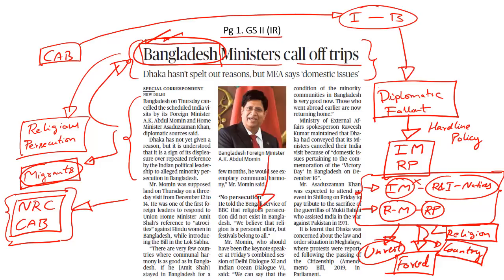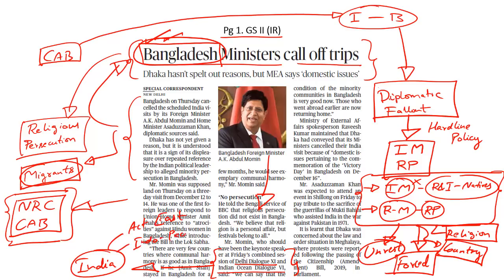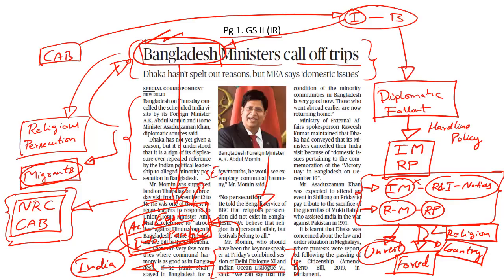The Bangladeshi foreign minister was supposed to participate in two important dialogues — the 11th edition of the Delhi dialogue and the 6th edition of the Indian Ocean dialogue. Both these initiatives are a key part of India's foreign policy and they are designed to promote India's Act East policy as well as India's Indo-Pacific strategy. Bangladesh, being an eastern neighbour of India, plays a key role in both initiatives. If India's ties with such key partners are affected, it could have an impact on foreign policy strategies such as the Act East policy and the Indo-Pacific strategy, which are focused on Southeast Asian and East Asian countries and the Indian Ocean region respectively.